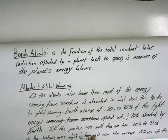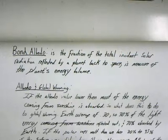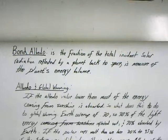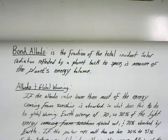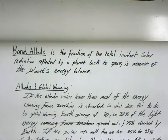Albedo has a big effect on global warming, as many scientists have predicted. They predict that if the albedo value is lower, then most of the energy coming from the sun is being absorbed.